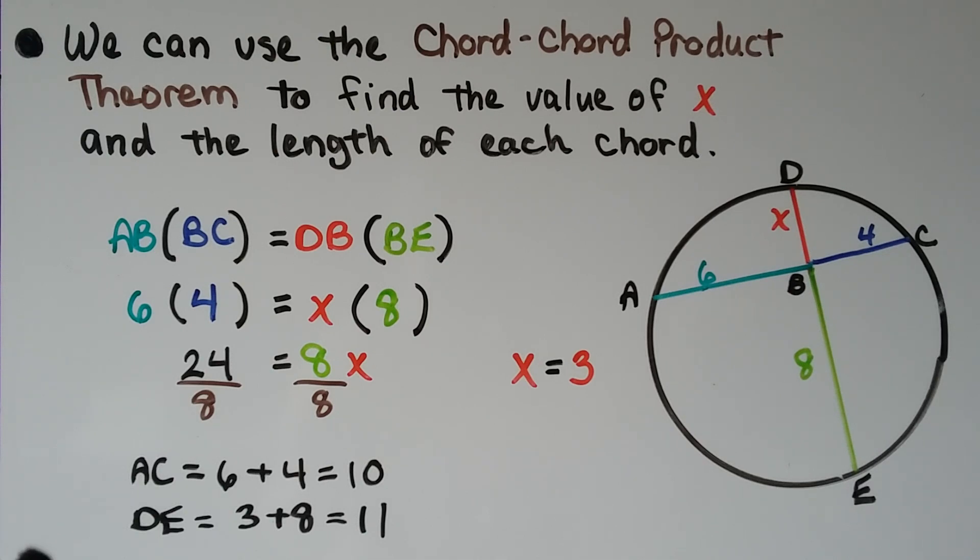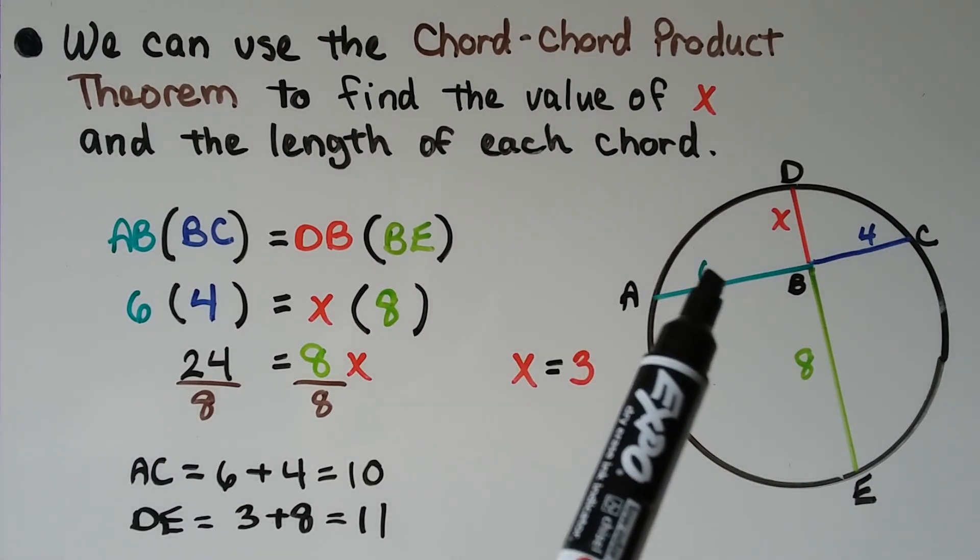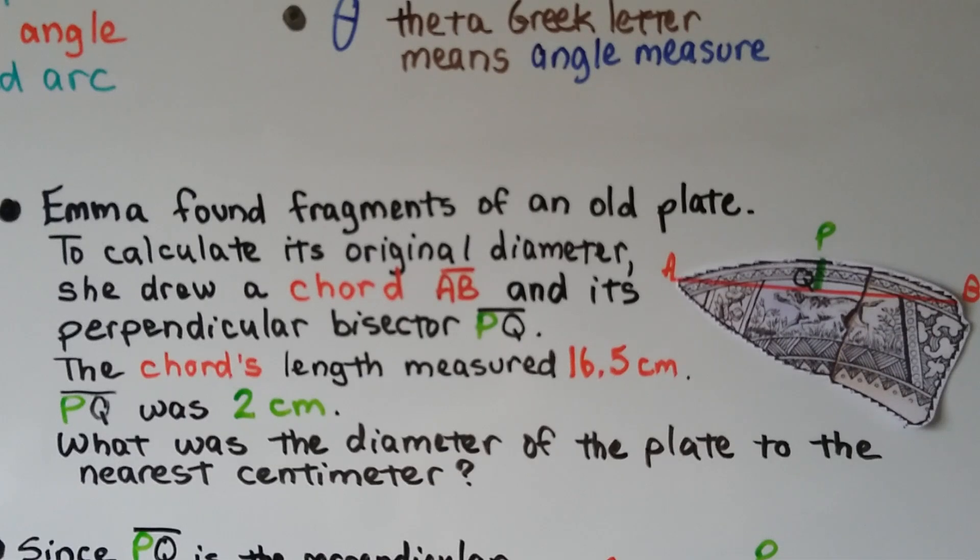So to find the length of DE, it's just 8 plus 3, which is 11. We multiply this length times this length, and it'll equal this length times this length. So let's try doing this in a problem.